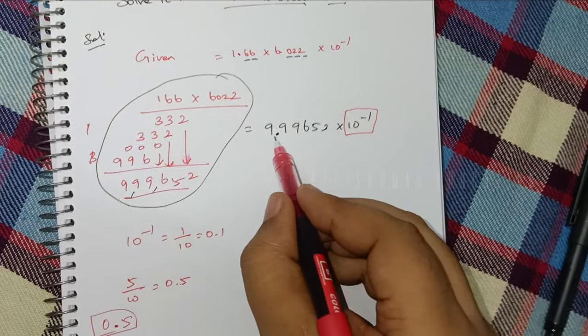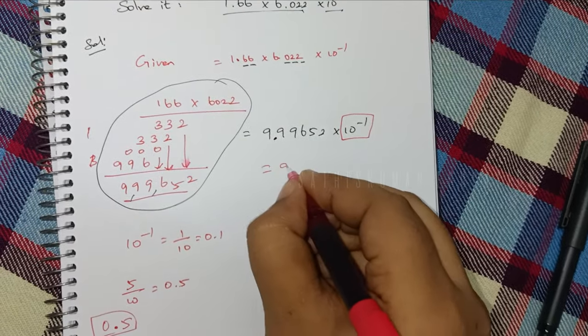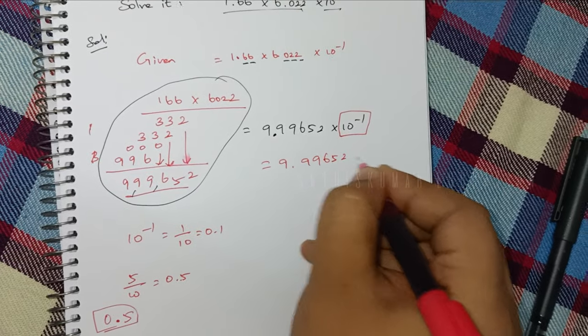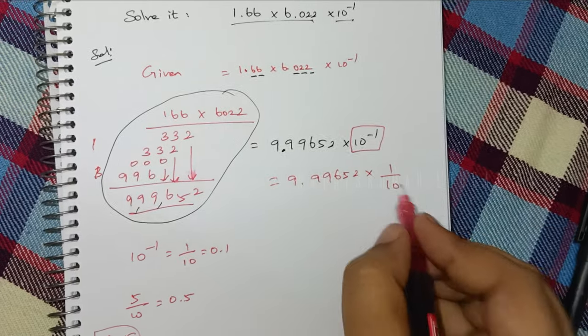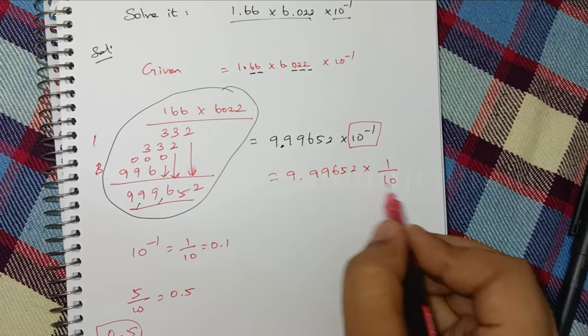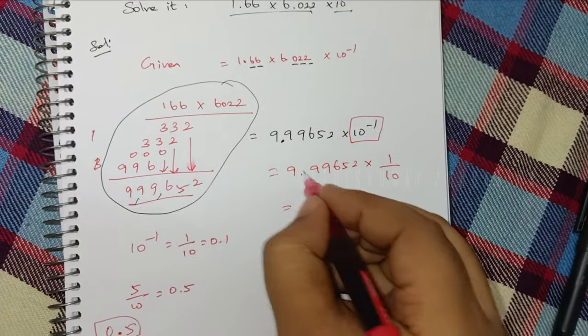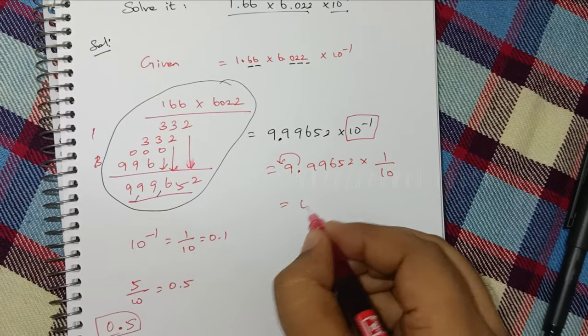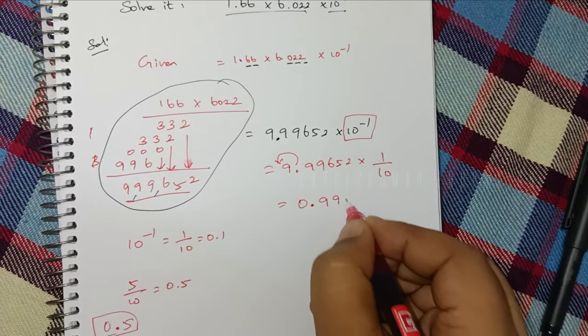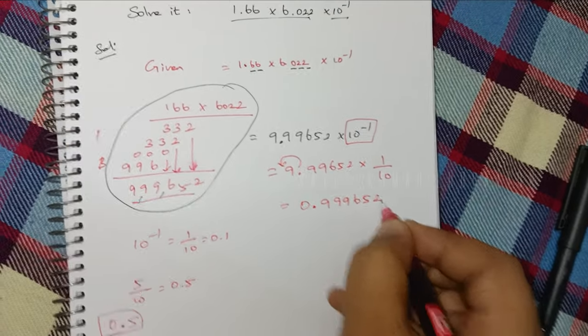Now this number is 9.99652 into 1 by 10, which equals 0.99652. This is the answer.